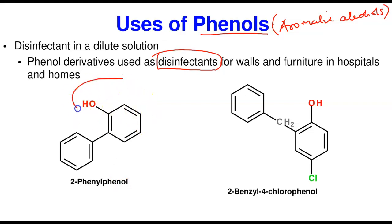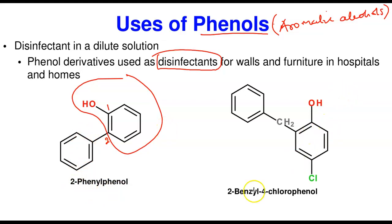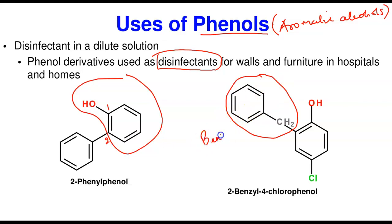A few specific phenol disinfectants: 2-phenylphenol — phenol is the benzene ring with an OH group, and the phenyl attachment is at carbon number two, hence the name. We also have 2-benzyl-4-chlorophenol. The benzyl group is attached at carbon two, and chloro is at carbon four — giving the name 2-benzyl-4-chlorophenol. Both compounds are used as disinfectants.